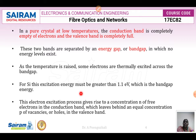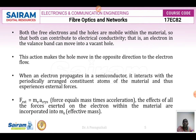For silicon, the excitation energy must be greater than 1.1 electron volts, which is the band gap energy. The electron excitation process gives rise to a concentration n of free electrons in the conduction band, with an equal concentration of holes in the valence band. Both electrons and holes are mobile within the semiconductor material, causing electrical conductivity.